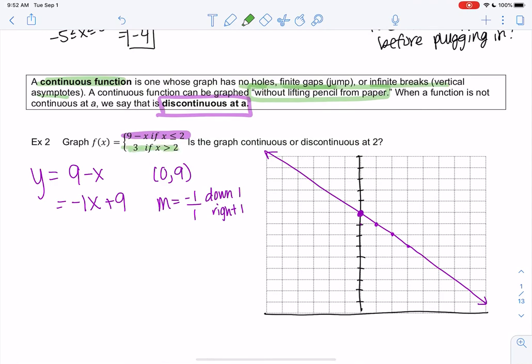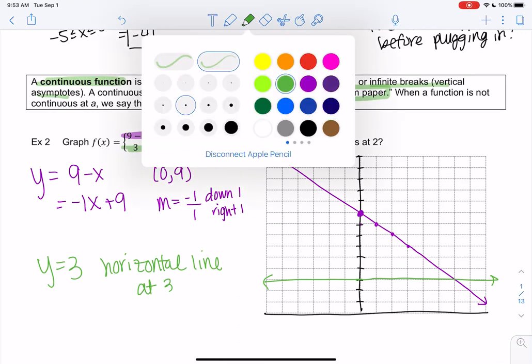So 3, what does 3 look like? Y equals 3 is a horizontal line at 3. And this is not a function because it fails that vertical line test. So that's why the pieces are going to make it turn into a function.